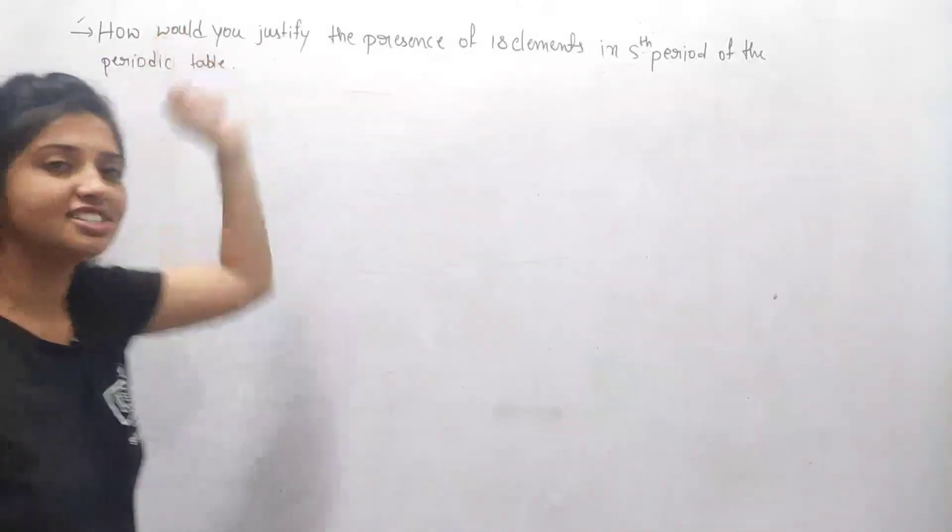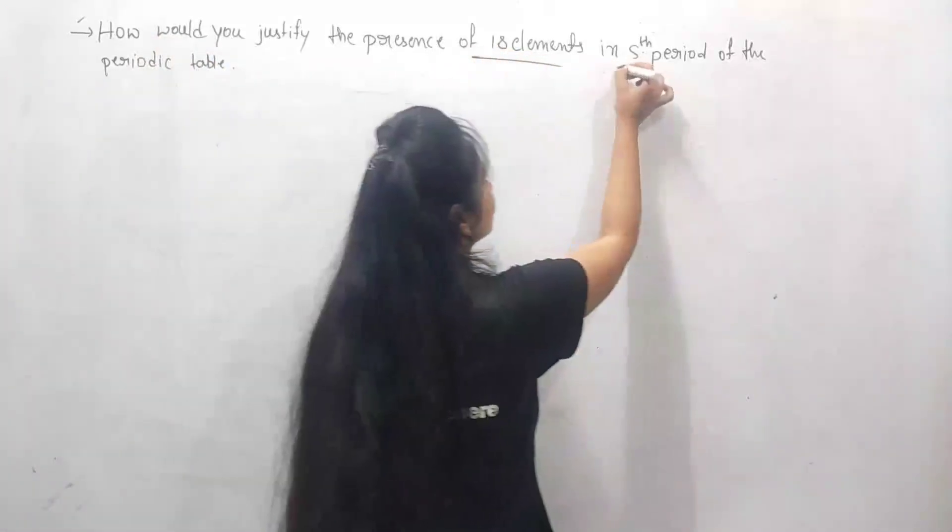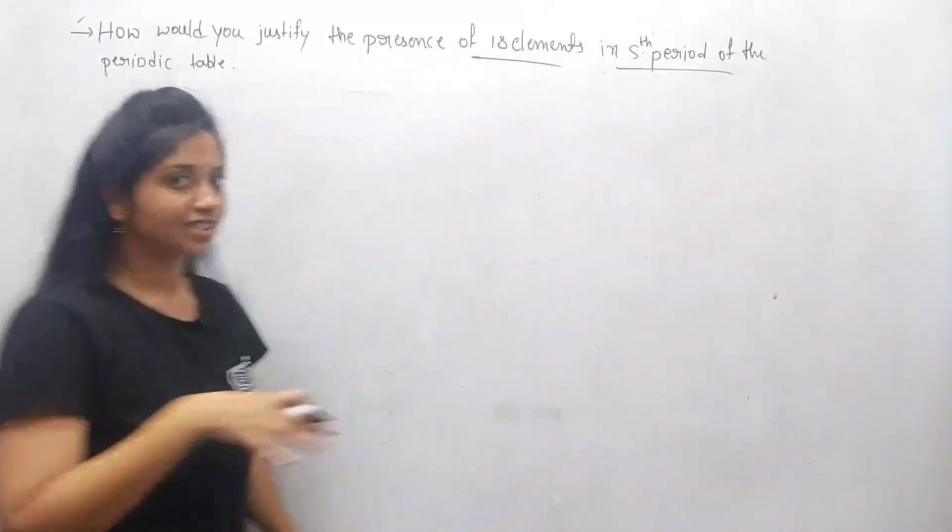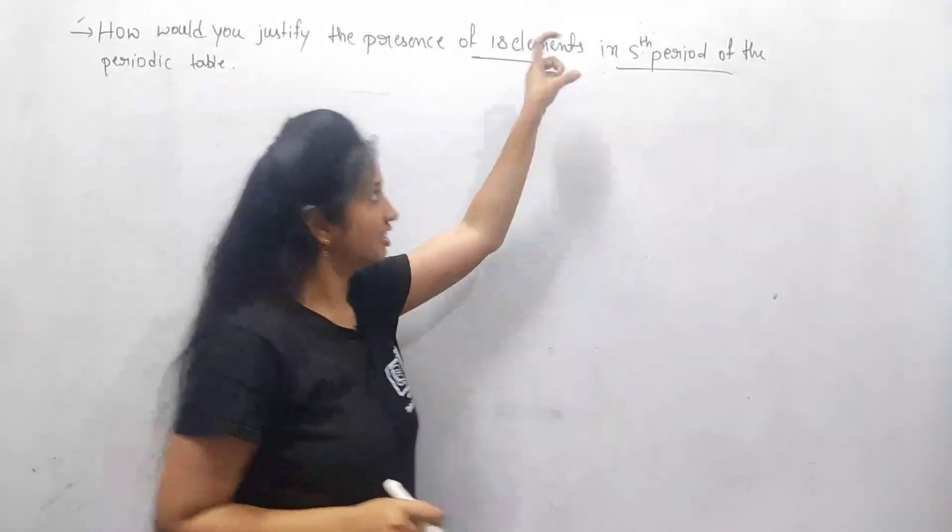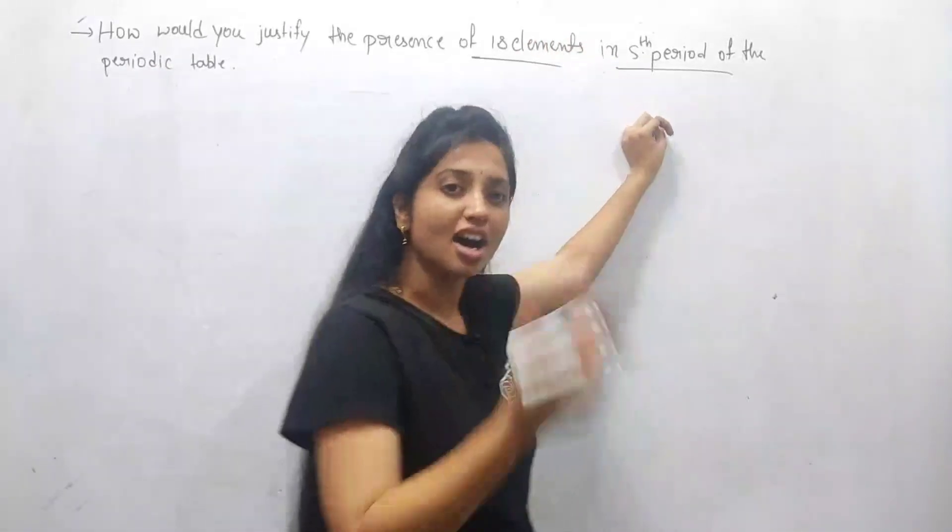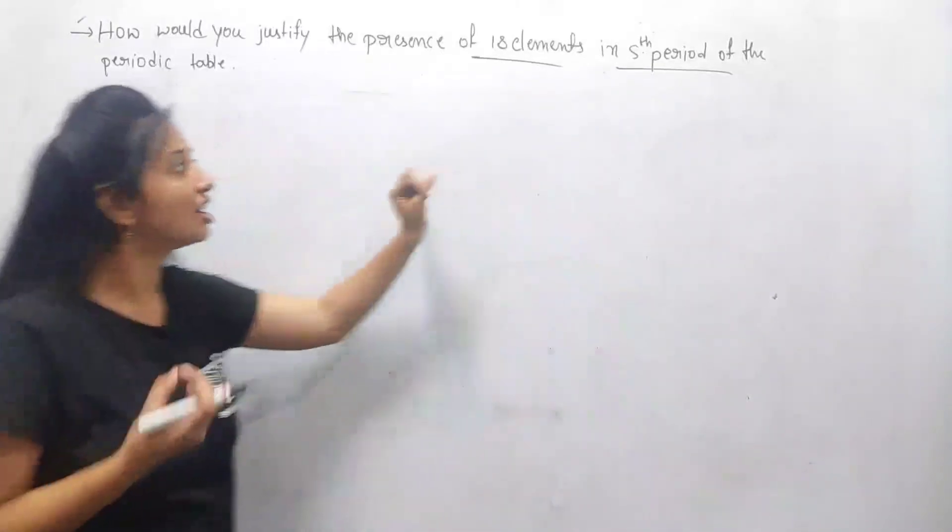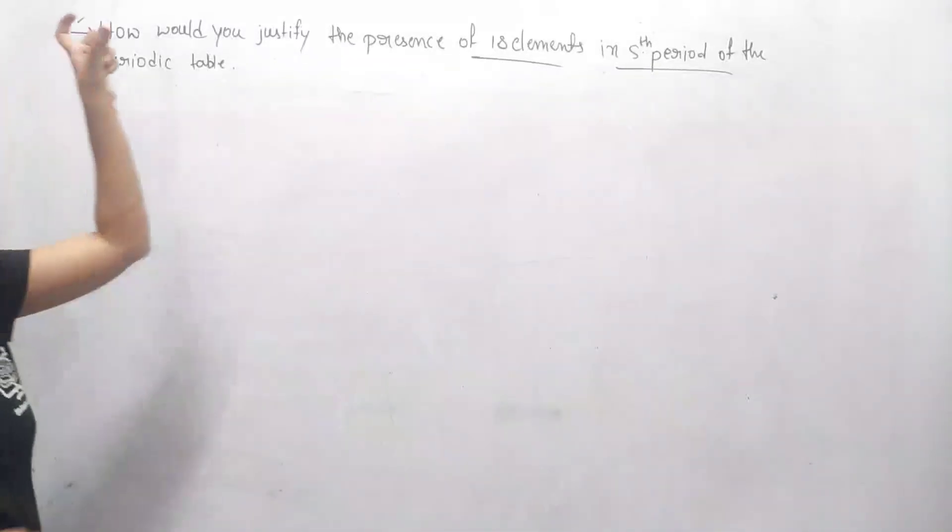you justify the presence of 18 elements in the fifth period? They already tell us that 18 elements are present in the fifth period, but how would you prove that and how would you justify that 18 elements are present in the fifth period?